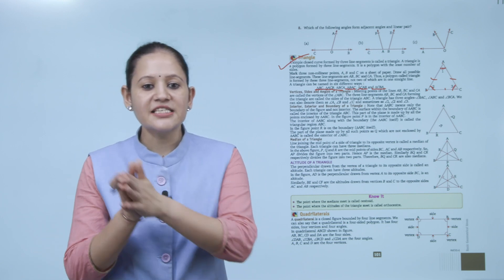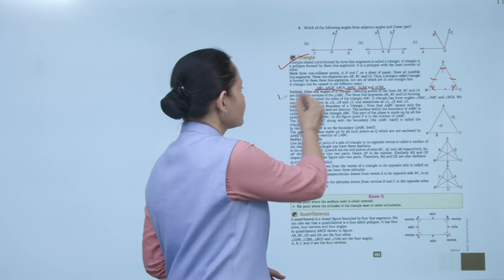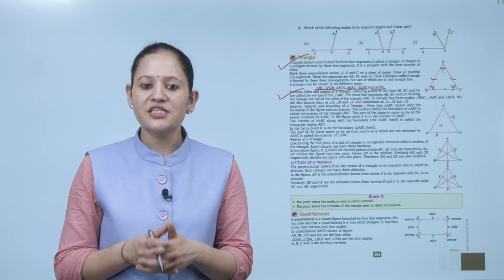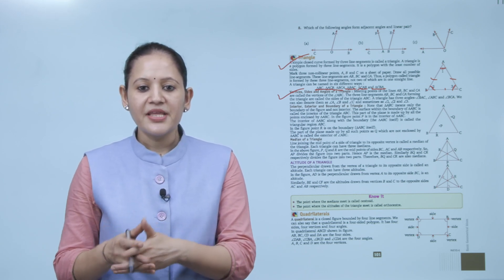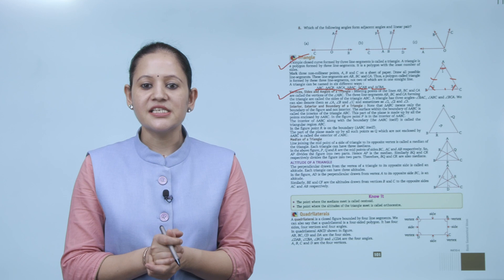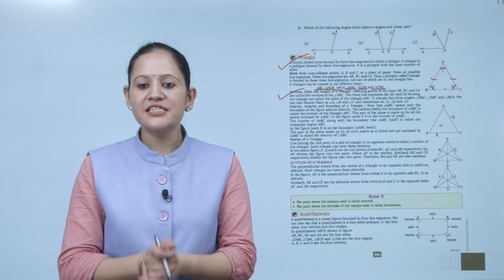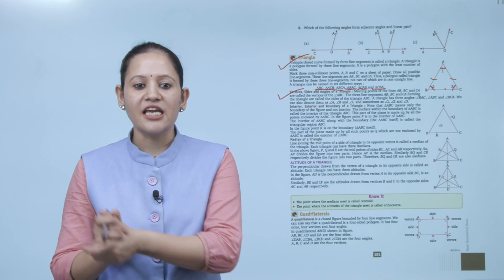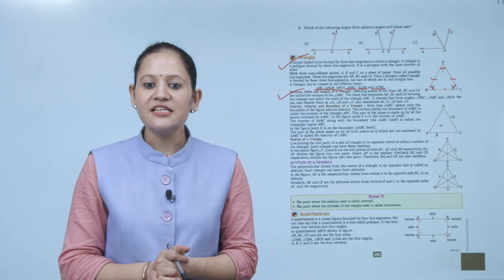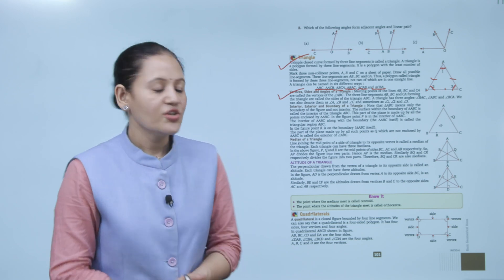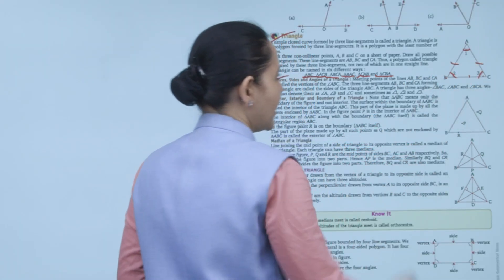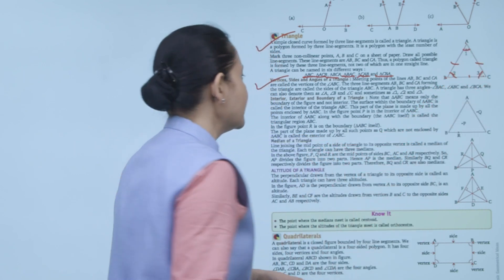Vertices, sides, and angles of a triangle: the meeting points of line segments AB, BC, and CA are called the vertices A, B, C. The three line segments AB, BC, and CA are the sides of triangle ABC. A triangle has three angles: ∠BAC, ∠ABC, and ∠BCA — we can also denote them as ∠A, ∠B, ∠C, or ∠1, ∠2, ∠3.